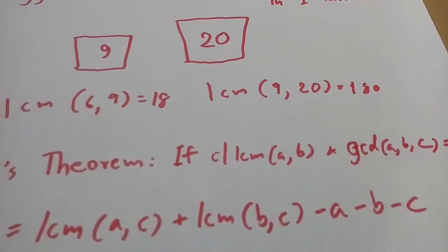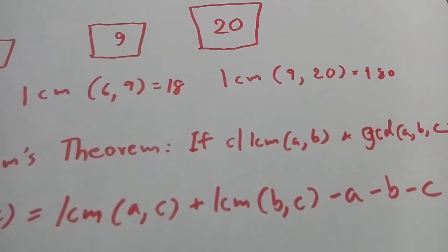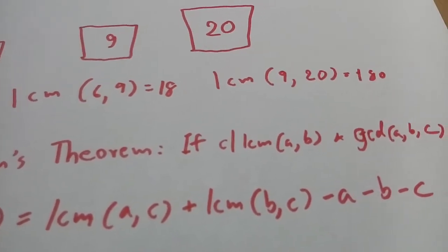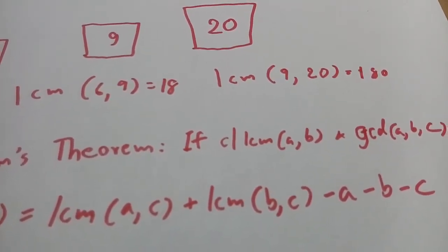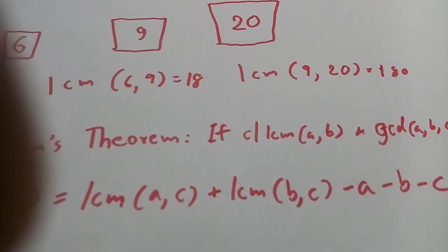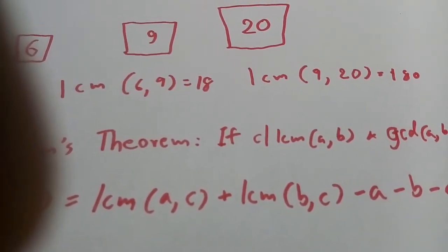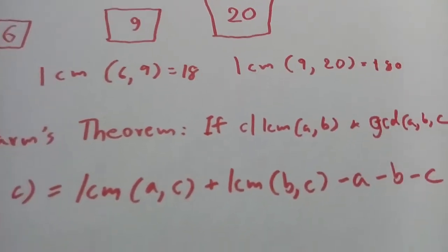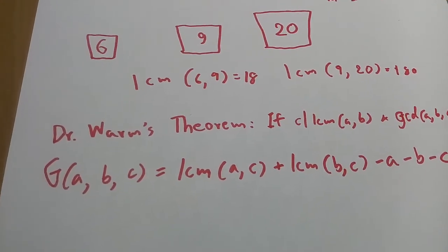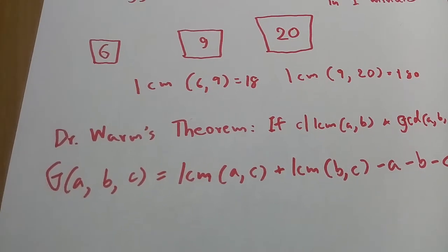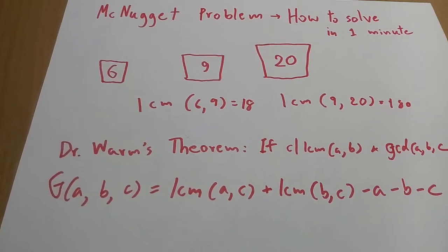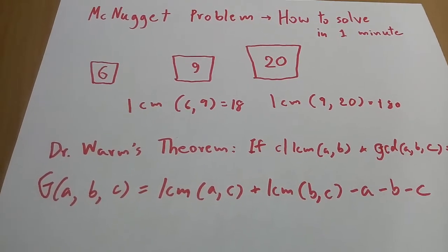Let's look at our theorem again. If we take six as C and A and B as nine and 20, then 180 can be divided by six, obviously. If this condition is satisfied, then the greatest number between A, B, C would equal the LCM of A, C plus LCM of B, C minus A minus B minus C.